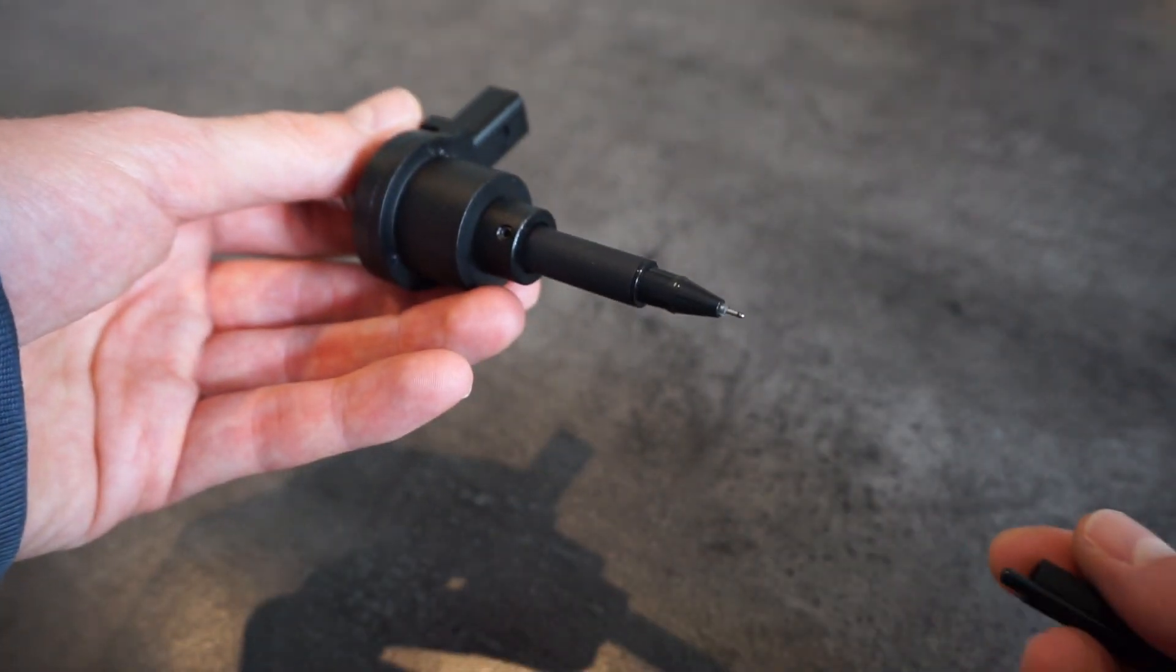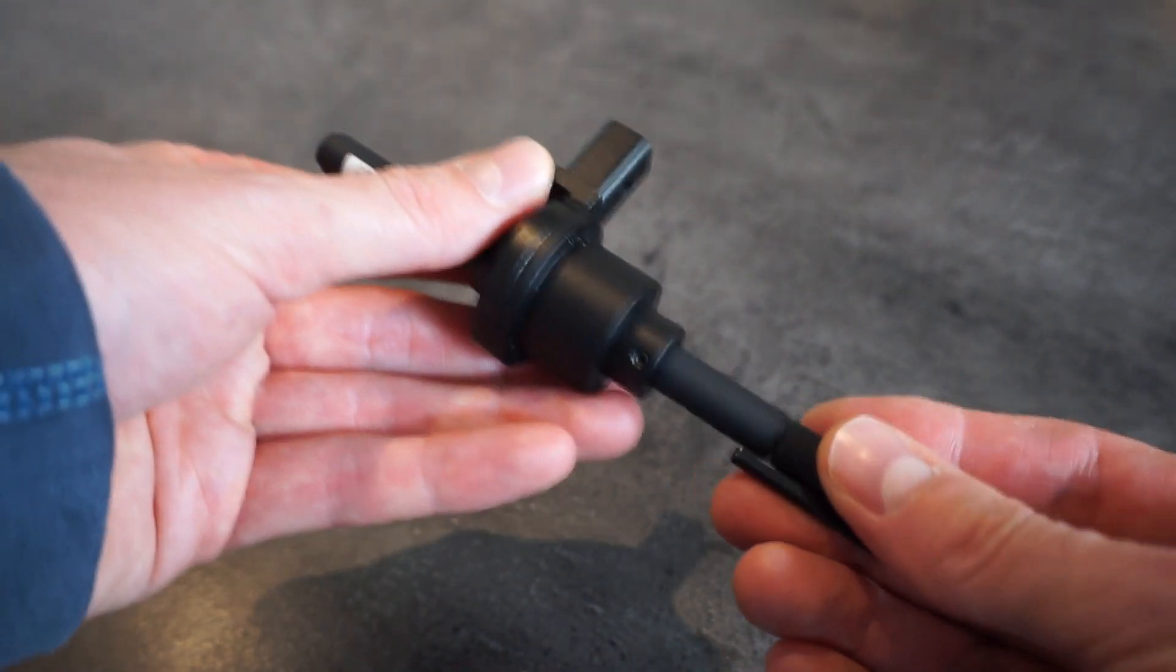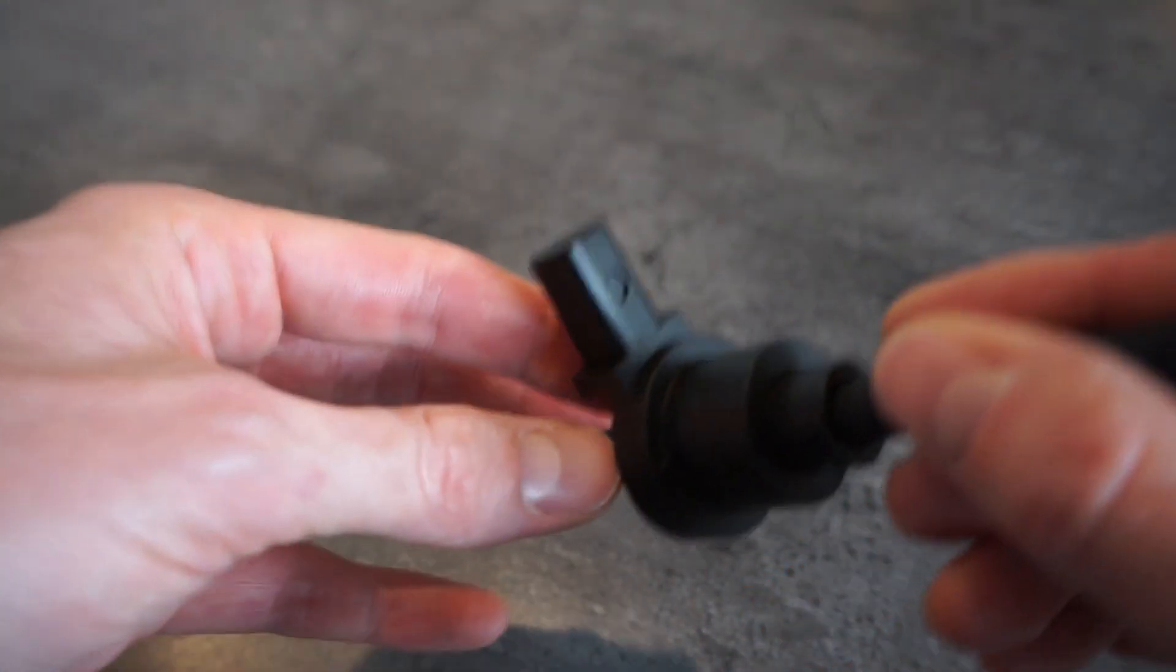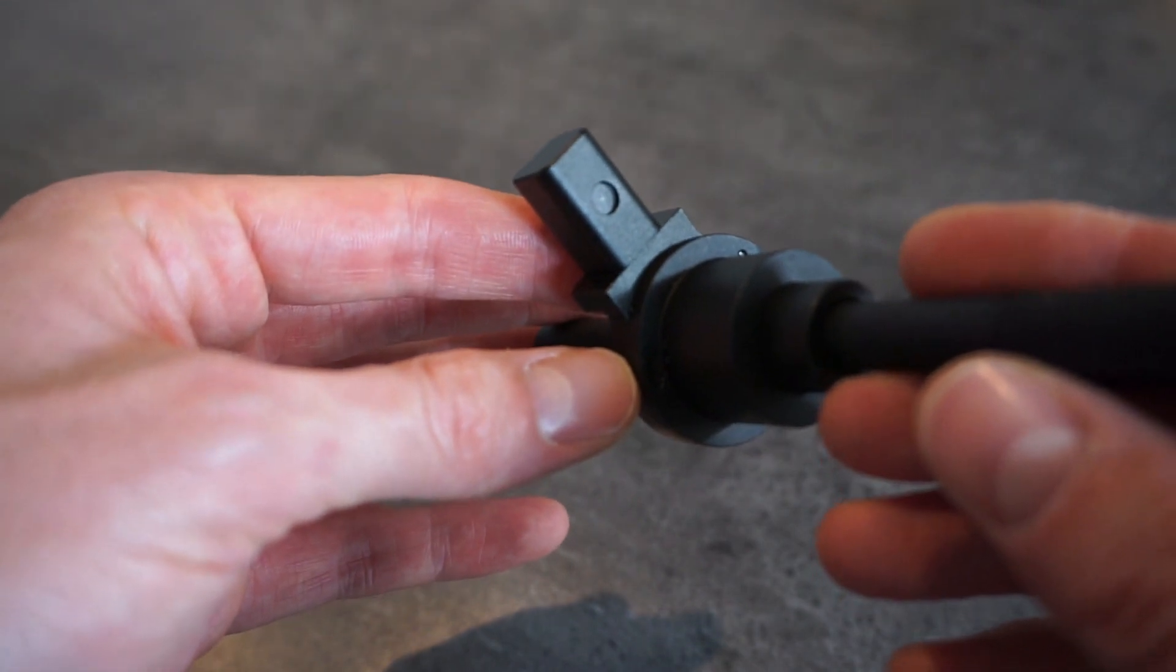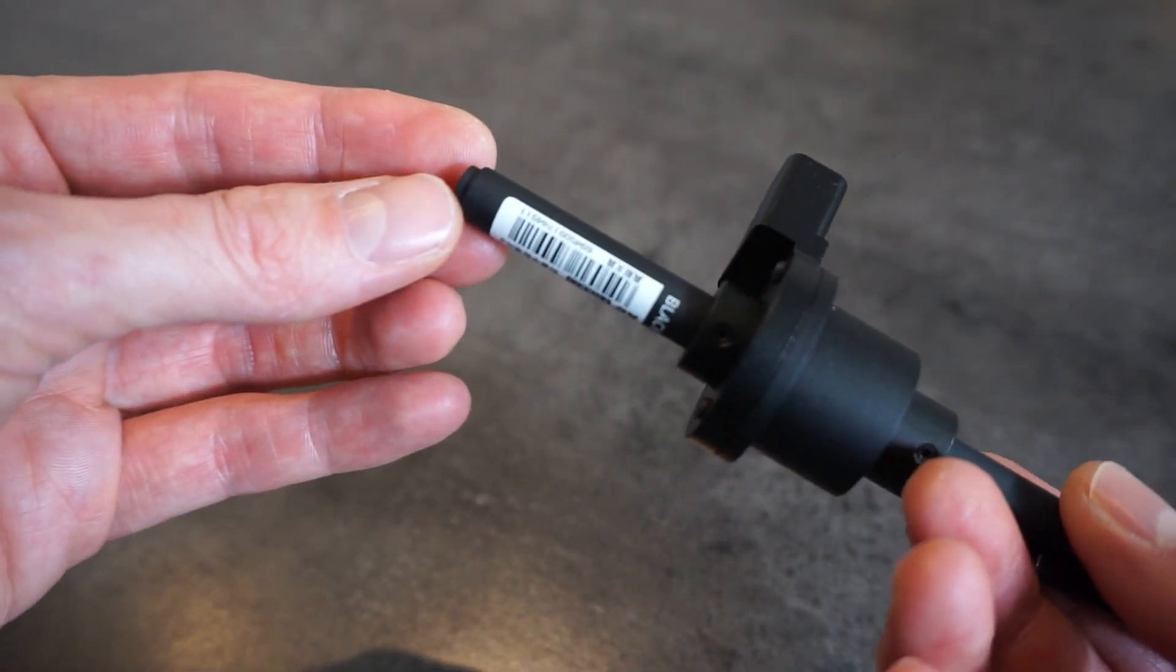It also compensates for inaccuracies when setting the pen down position. The pen is fixed using a couple of set screws and can be replaced with any other pen small enough to fit in the holder.